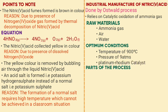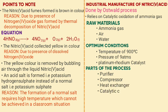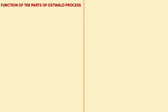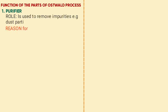Parts of the process include: purifier, compressor, heat exchanger, catalytic chamber, reaction chamber, and absorption tower. The function of the purifier is to remove impurities such as dust particles, to prevent poisoning of the catalyst. The compressor compresses the ammonia-air mixture, reducing its volume, so as to raise the pressure to about 9 atmospheres.